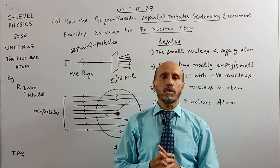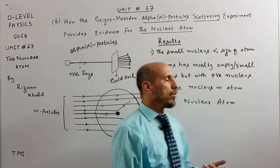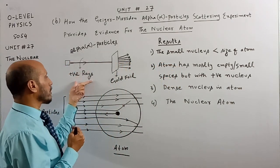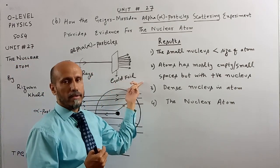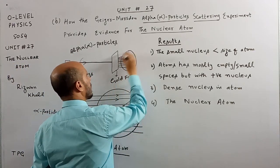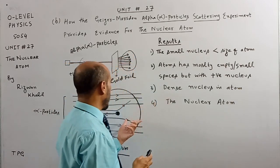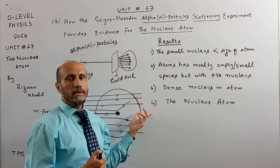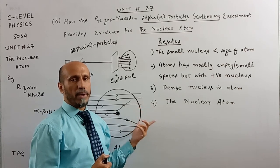After studying the scattering pattern, they concluded different results regarding their experiment. Alpha particles are positively charged rays. They threw these alpha particles onto the gold foil and observed the scattering pattern. Under this diagram, a single atom of gold foil is drawn to explain the scattering of these alpha particles.